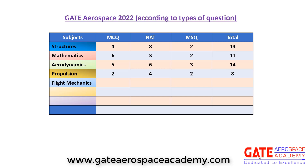In flight mechanics, 3 MCQ, 2 NAT and 2 MSQ questions were there, so total 7 questions from the flight mechanics subject. From space mechanics, only one question was asked. That was also MSQ type — no NAT, no MCQ, only one MSQ type question, so only one question in total from the space mechanics subject.